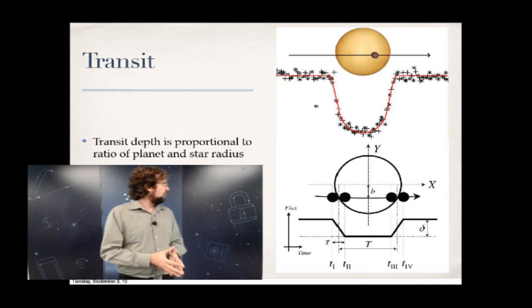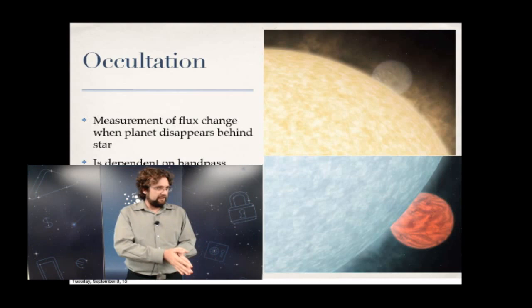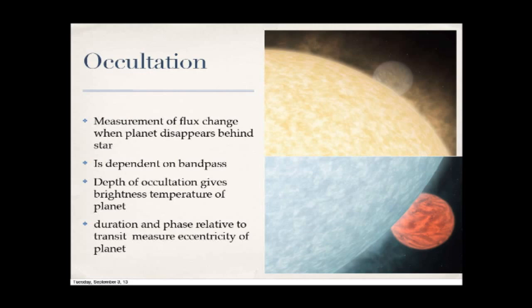The occultation measures a flux change when the planet goes behind the star, and it's heavily dependent on the bandpass you're using. This graphic from the Spitzer press release shows the difference between an optical occultation — a bright star with a dim planet going behind — versus an infrared occultation, where you see a lot of flux from the glowing planet going behind a subdued, darker star.